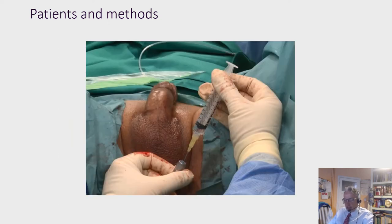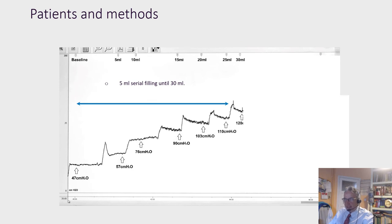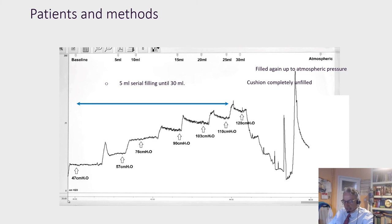The initial pressure was measured with empty cushion and by 5 milliliters, filling up until 13 milliliters. Then, the cushion was completely unfilled and afterwards, we filled again up to atmospheric pressure.